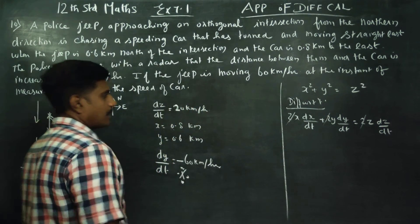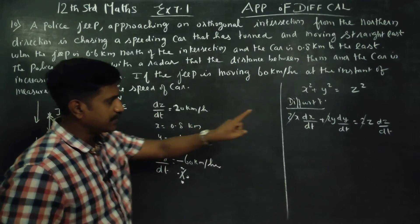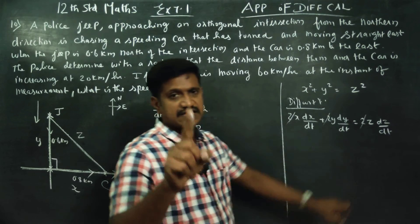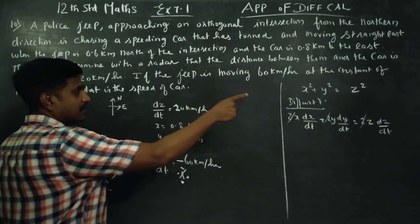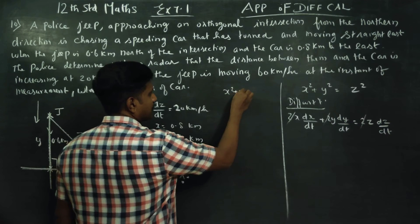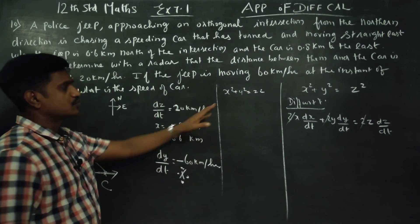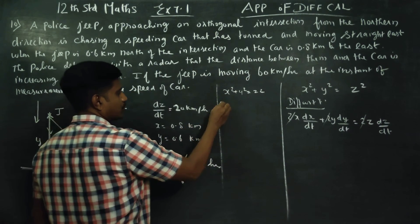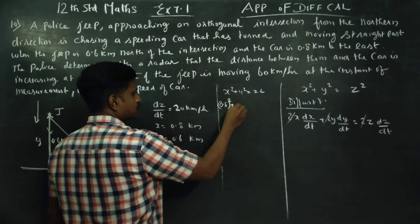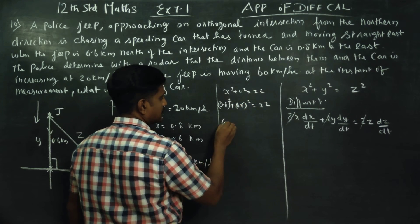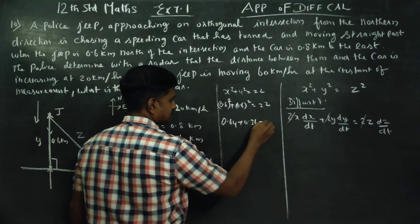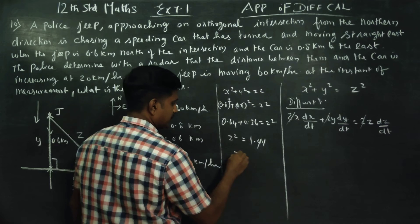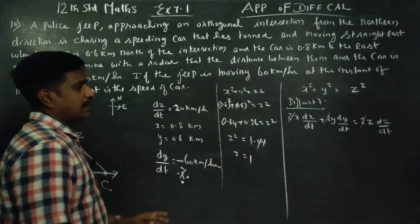Now substitute the values. First, find z using Pythagoras' theorem: x² + y² = z². So 0.8² + 0.6² = z². That gives 0.64 + 0.36 = z², so z² = 1, and z = 1.